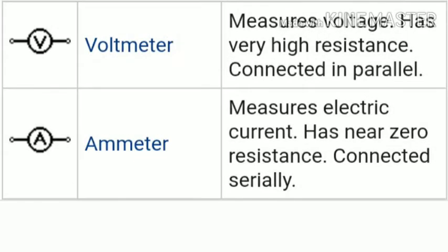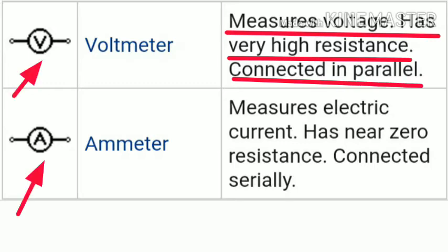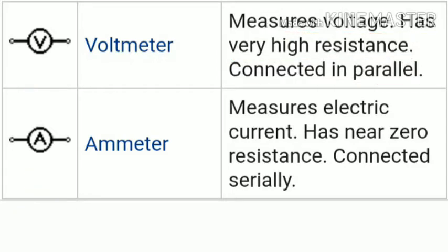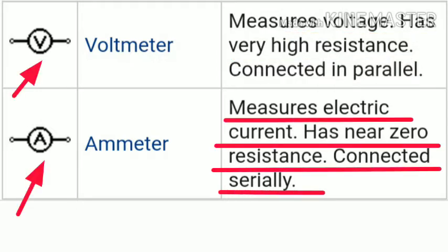The next common symbols are the voltmeter and ammeter. The voltmeter measures voltage and has high resistance; it is connected in parallel. The ammeter measures electric current, has near-zero resistance, and is connected in series.